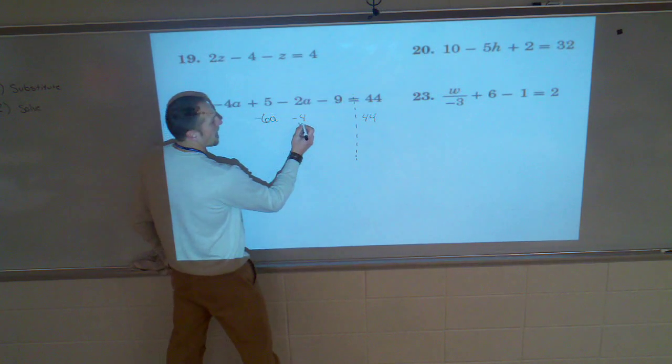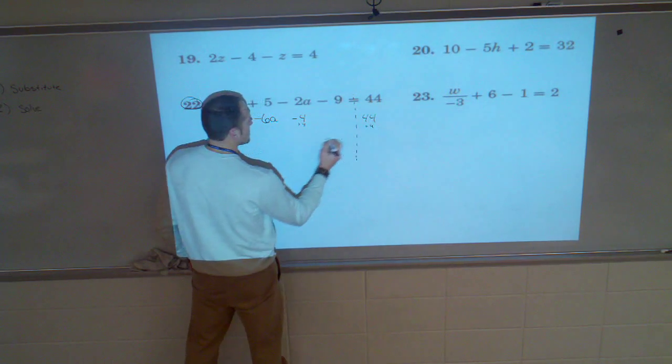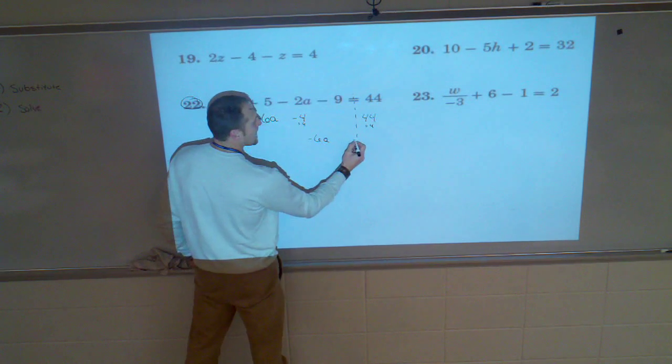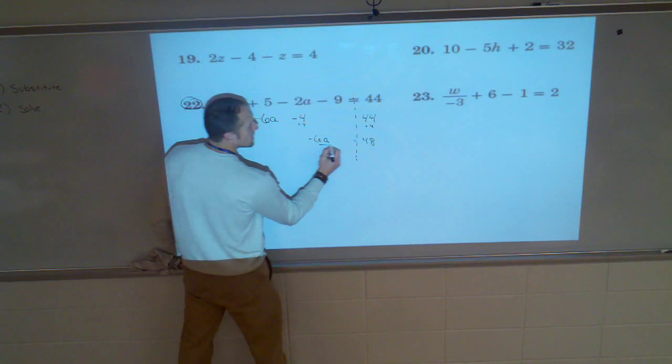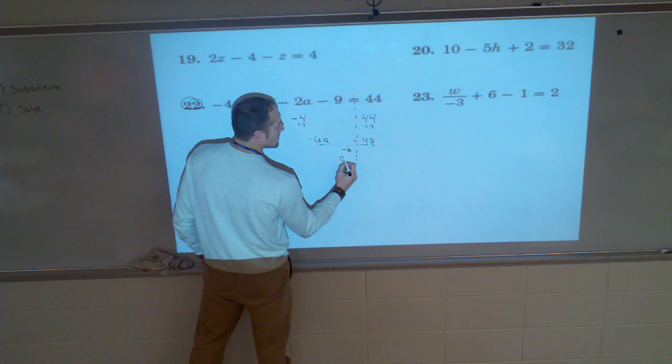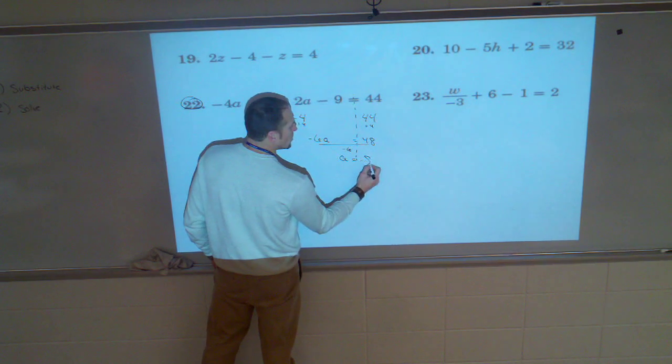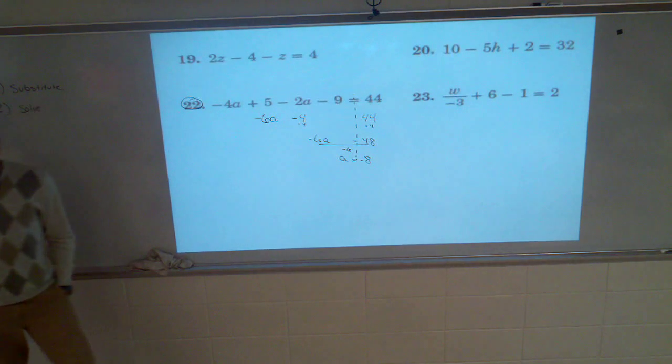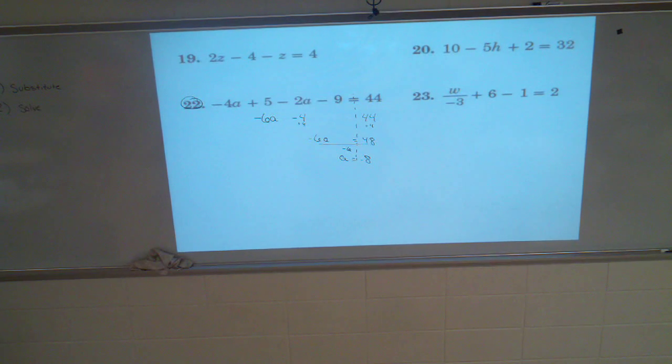From here, we're going to add 4 to both sides. Negative 6a equals 48. Divide by negative 6. A is equal to negative 8.